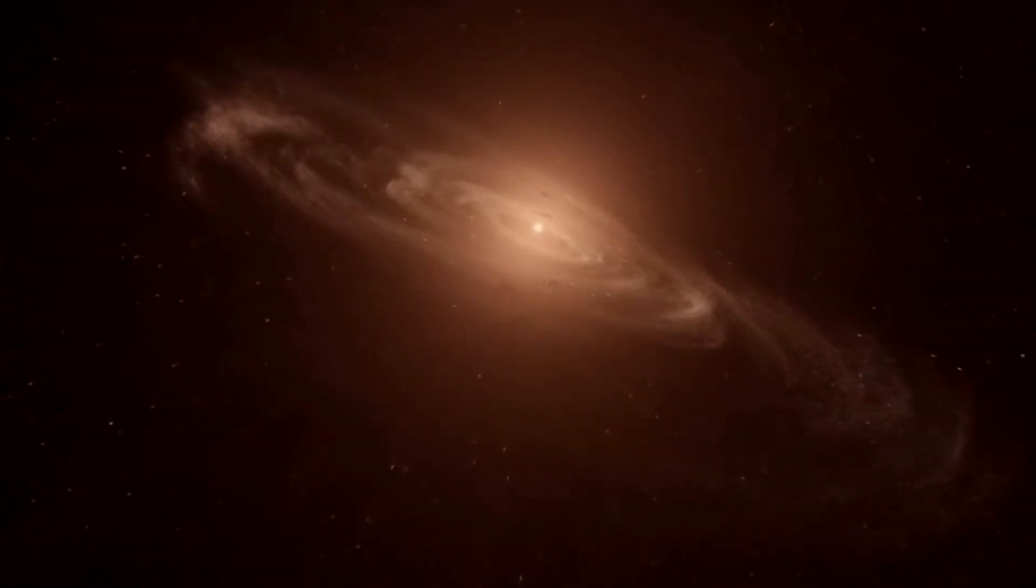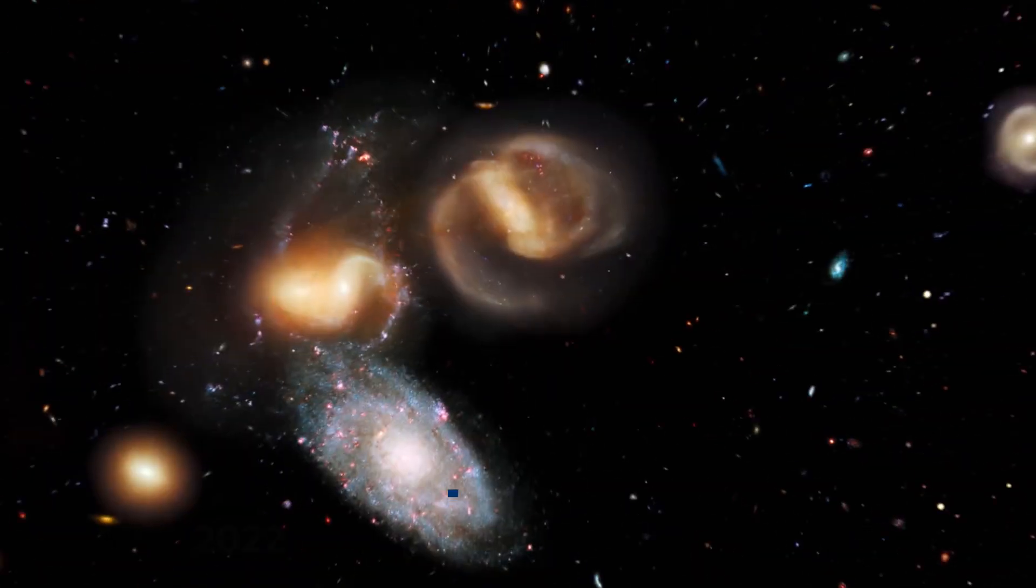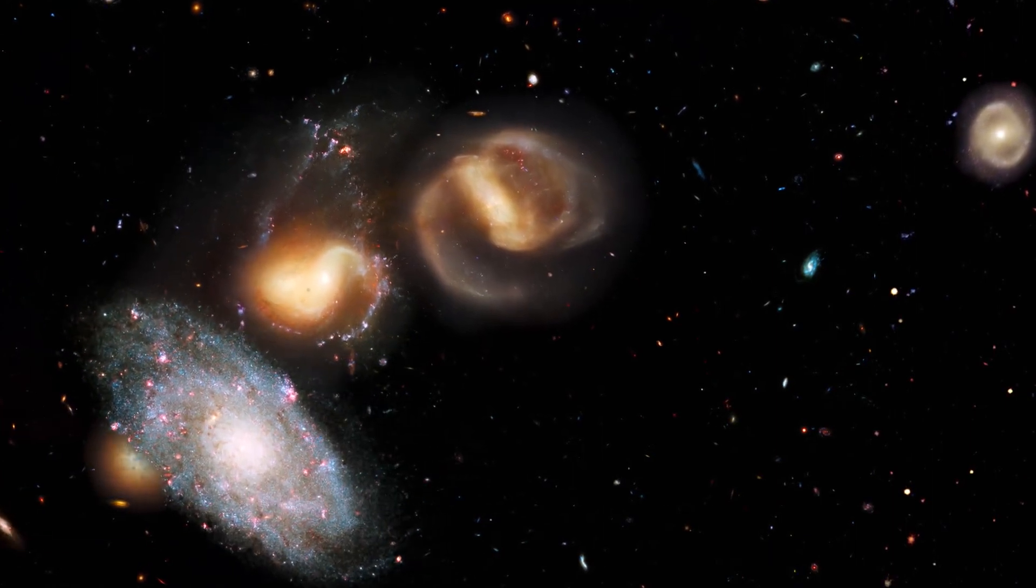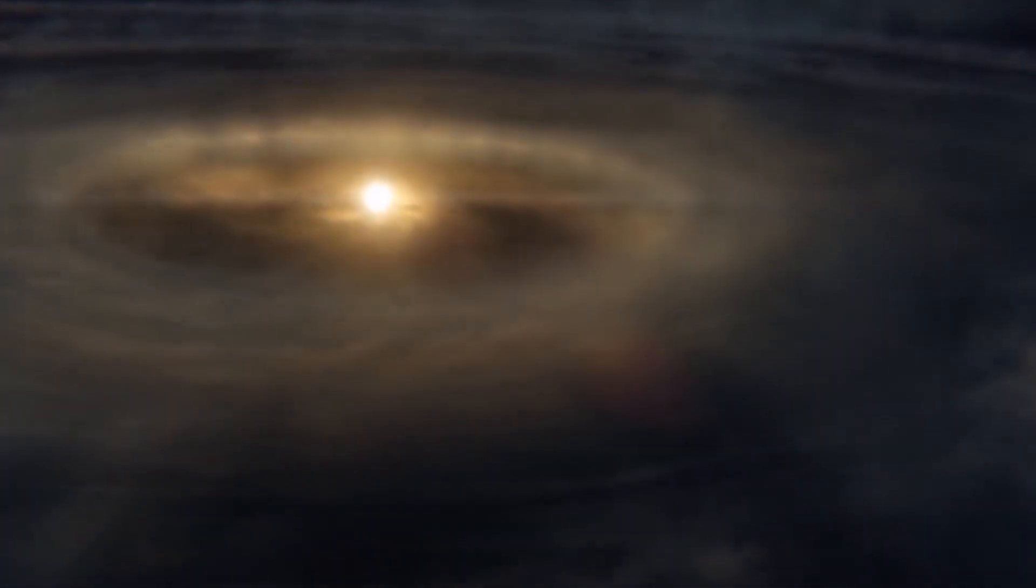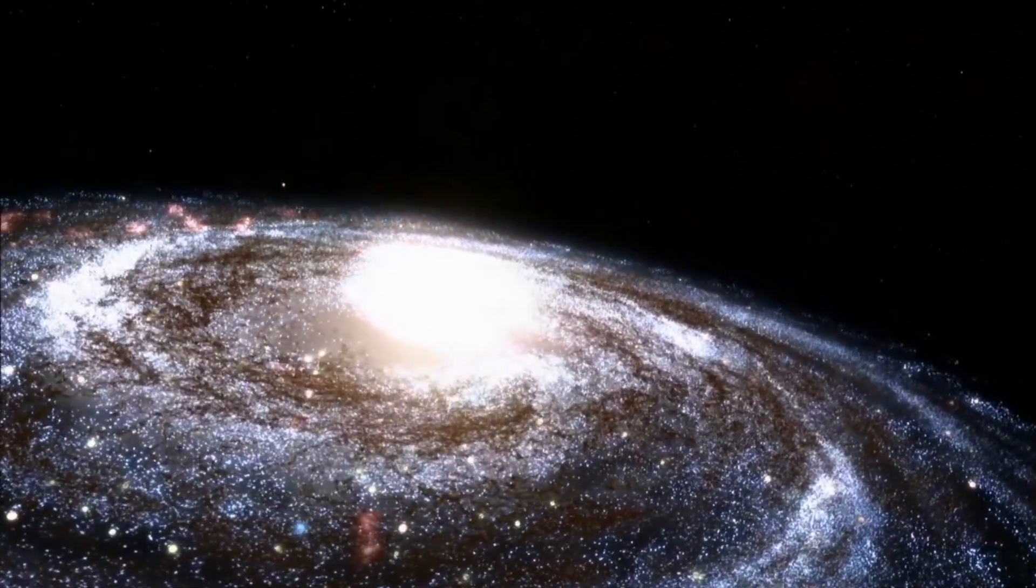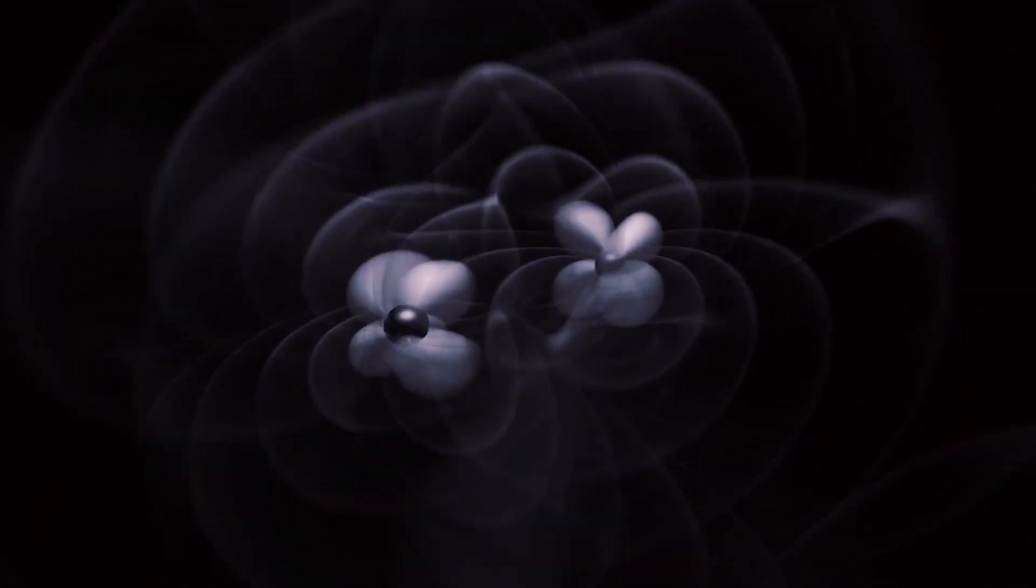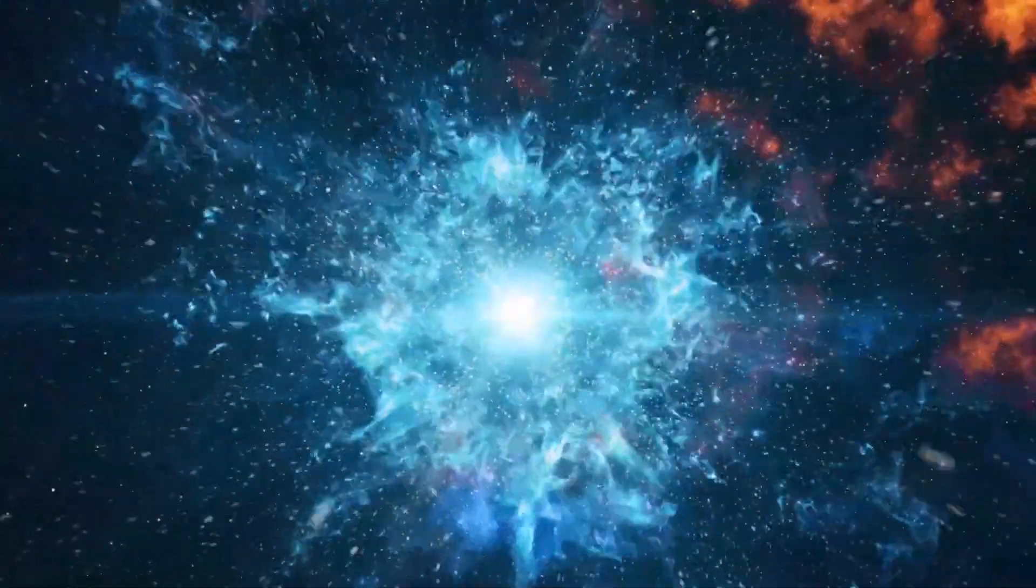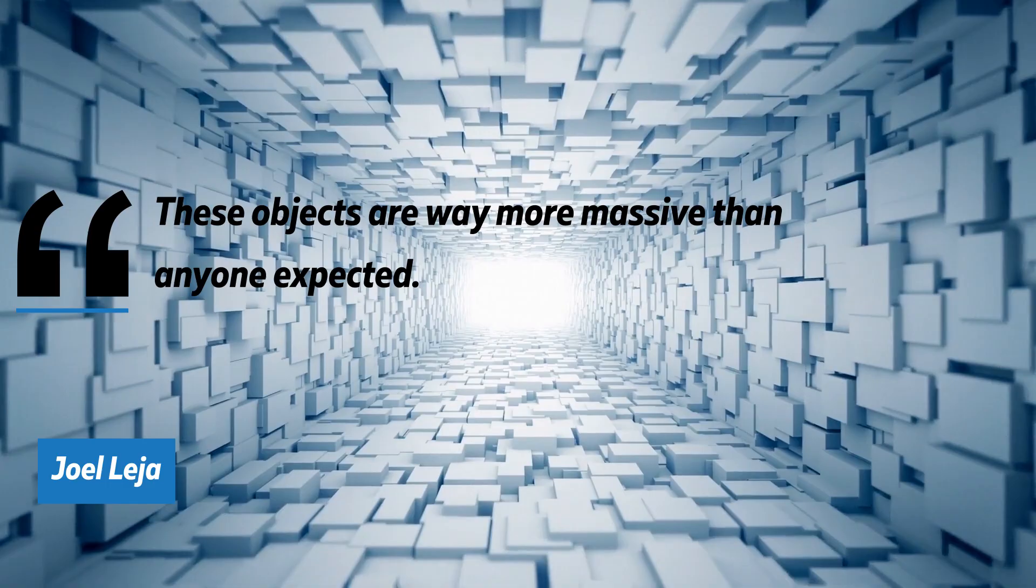The fact that galaxies existed back then isn't the issue. The Milky Way is estimated to be older, after all, and scientists in 2022 found four galaxies that likely formed 350 million years after the Big Bang. But these six galaxies are just enormous, significantly dwarfing these four other galaxies. In particular, these six galaxies are estimated to have around the same amount of stars back then as the Milky Way does now. Considering the Milky Way only amassed such a huge amount of stars after billions of years of mergers and accretion, it is baffling that there were galaxies so enormous not even one billion years after the Big Bang. These objects are way more massive than anyone expected.